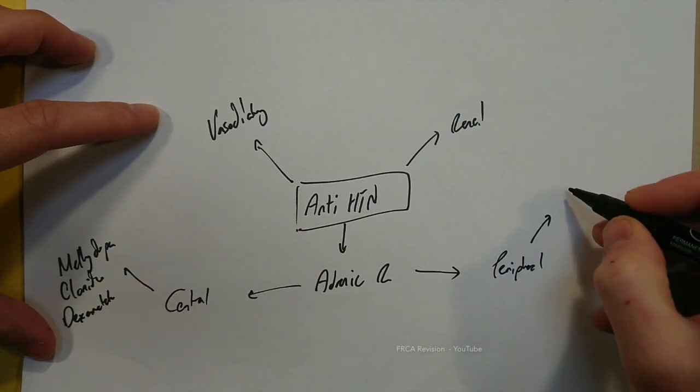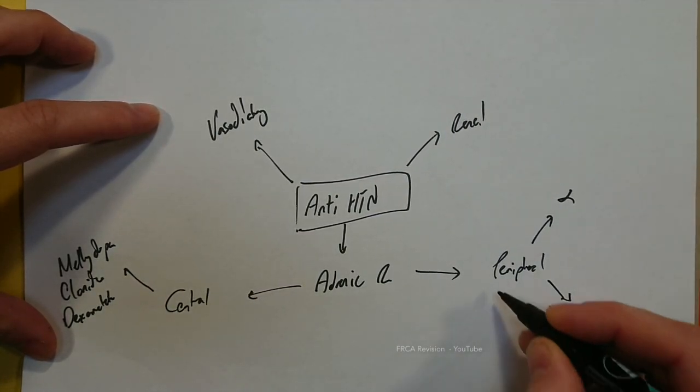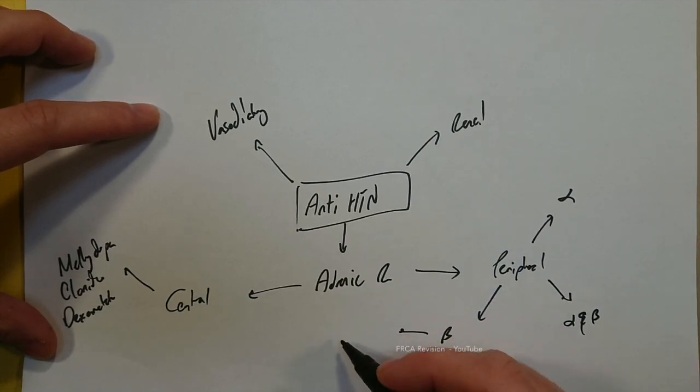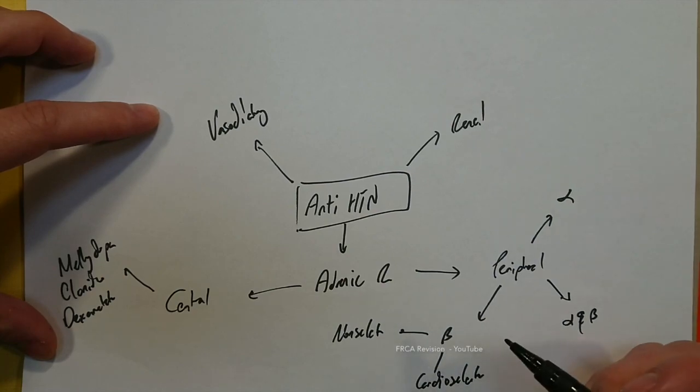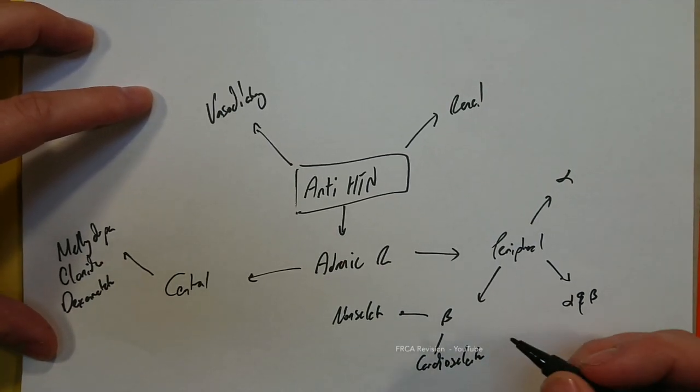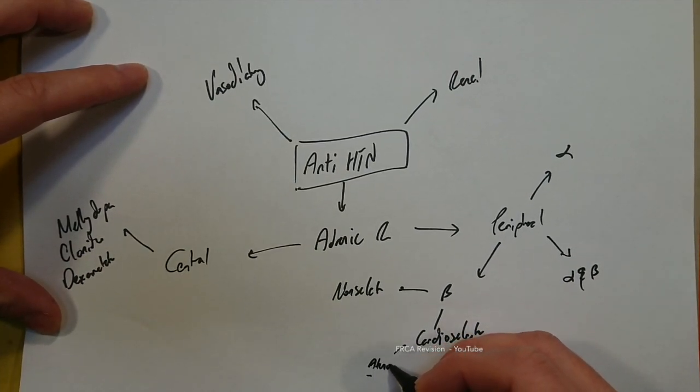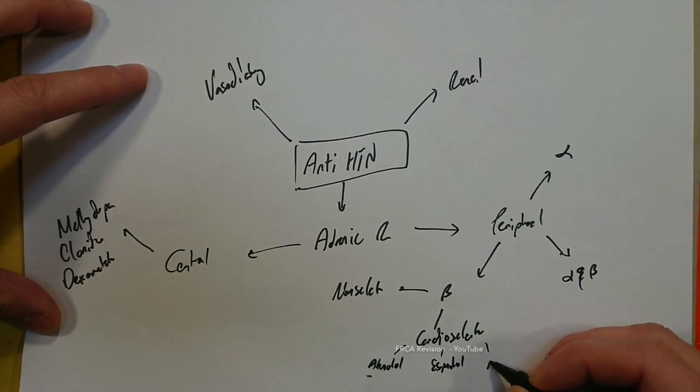In the peripheral, we can split this down to alpha, alpha and beta effects, and then beta blockade. In the beta, we have the non-selective and the cardioselective. In the cardioselective, there are things such as atenolol, esmolol, and metoprolol.